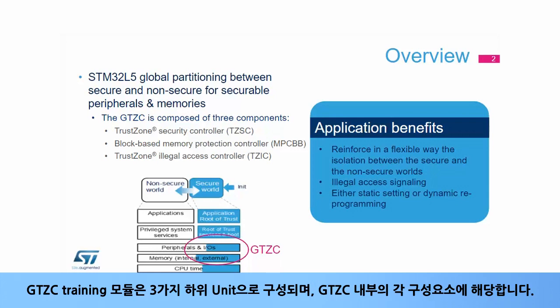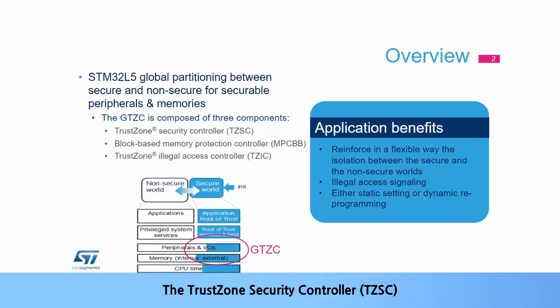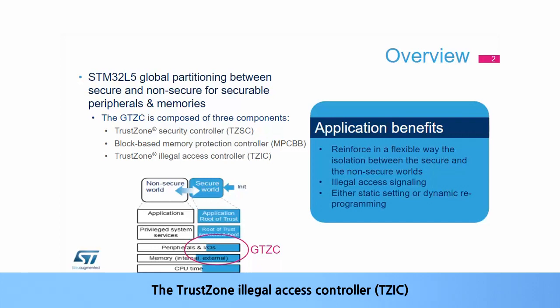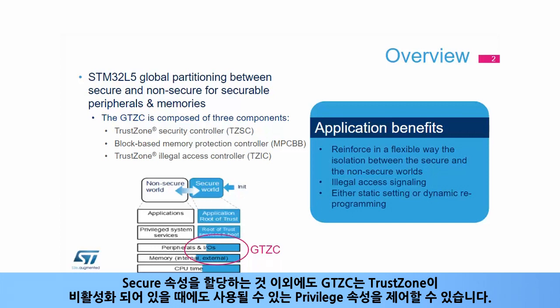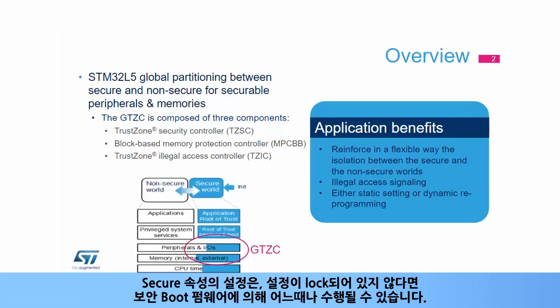This GTCC training module is composed of three subunits corresponding to each component inside GTCC: the TrustZone Security Controller or TZSC, the Block-Based Memory Protection Controller or MPCBB, and the TrustZone Illegal Access Controller or TZIC. In addition to assigning a secure attribute, the GTCC also controls the privileged attribute that can be used even when TrustZone is disabled. The setting of the secure attribute can be performed at any time by the secure boot firmware unless the configuration is locked.